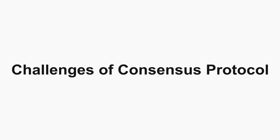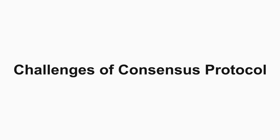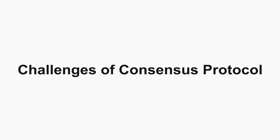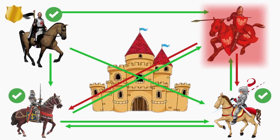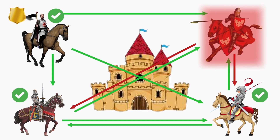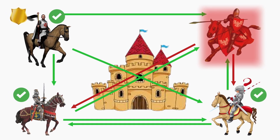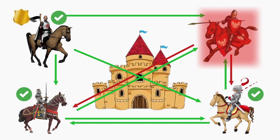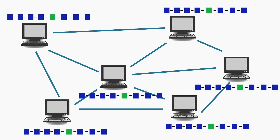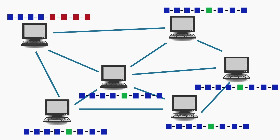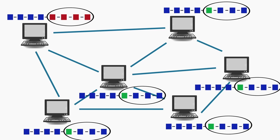Before going into the consensus protocol, we will look at the challenges. We got some concept about the consensus protocol in the Byzantine fault tolerant video — we understood how four generals agree to either attack or retreat. Here we will learn how a distributed network agrees with one another to keep adding blocks in the blockchain, how to know when to add the block and which block to add across the whole network.